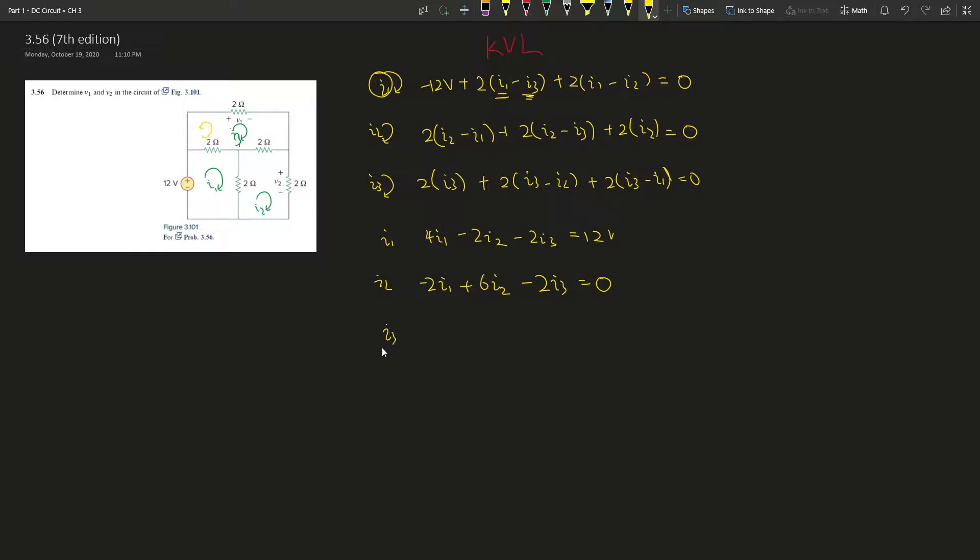2, 6, 2, 6. Okay, cool. And then i3. i3 is negative 2i1, i2 is negative 2i2, and then i3, i3, i3, i3, so plus 6i3. This gives us zero.